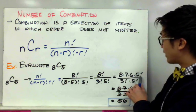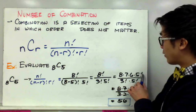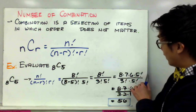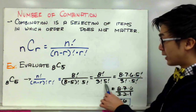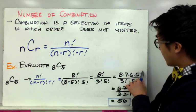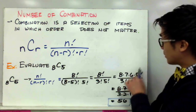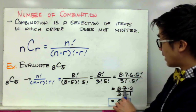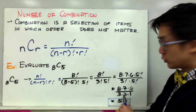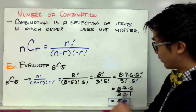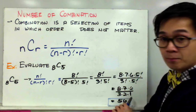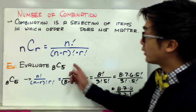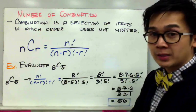The reason I expanded it this way is so I don't need to go further to 4, 3, 2, and 1 because I can cancel 5 factorial automatically. I'm left with 8 times 7 times 6 over 3 times 2 times 1, which gives me 56. This is the number of arrangements you can produce using this combination notation.